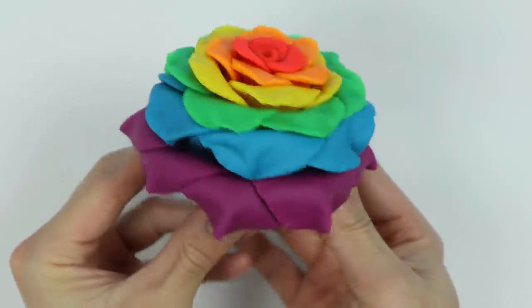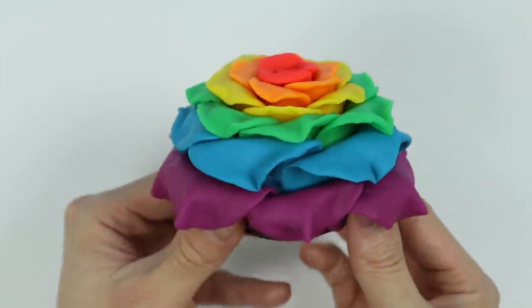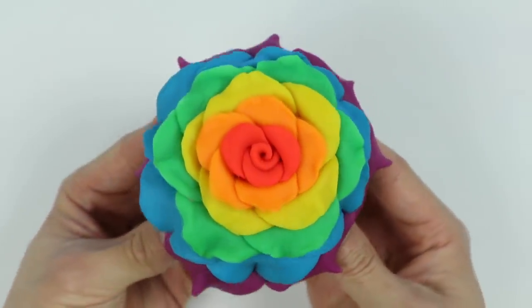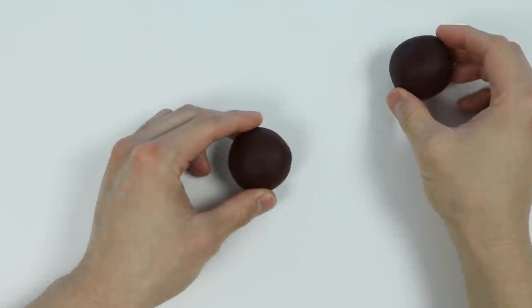Hey everyone, welcome back to the Awesomer channel. Today we'll be making a Play-Doh rainbow rose cake. It's really simple to make, so follow along if you have Play-Doh at home. Alright, let's start by rolling out some brown Play-Doh.